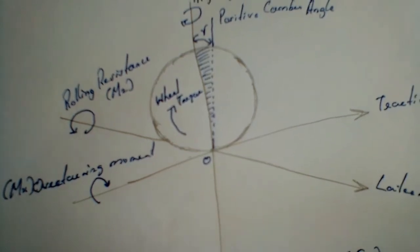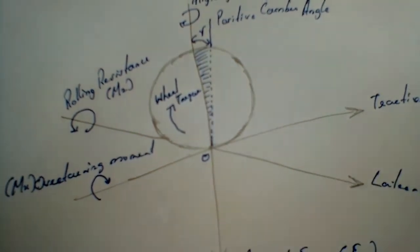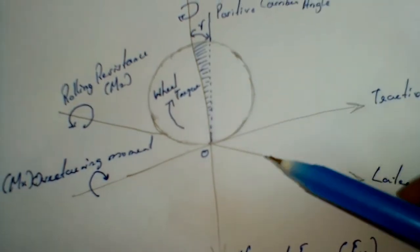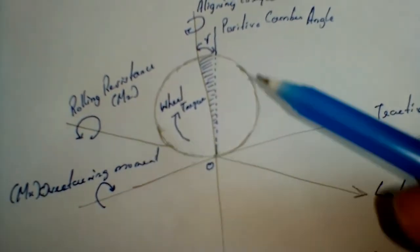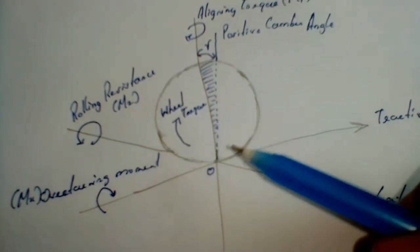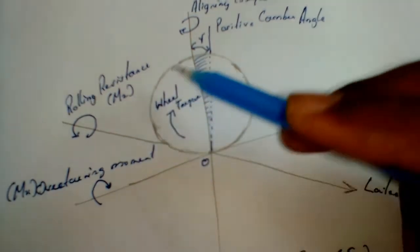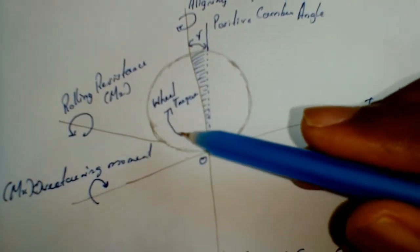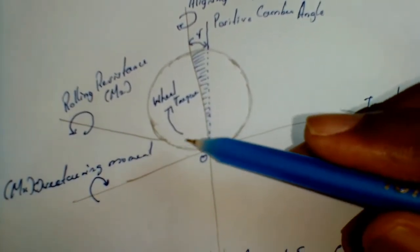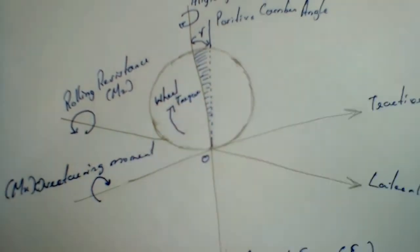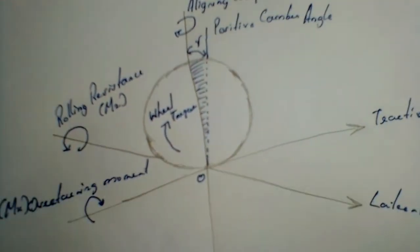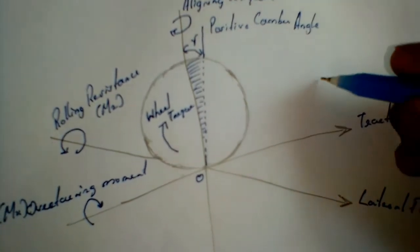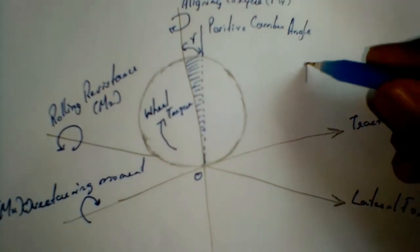Hey friends, welcome to my channel. Today I am going to talk about the forces and moments that are acting on a tire — a rolling tire. Consider a tire that is moving in this direction. We can see the wheel torque is in the clockwise direction.